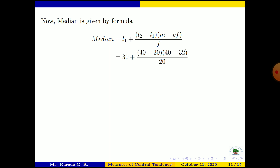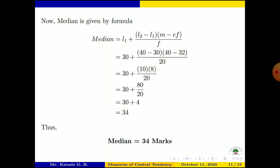Substituting values: Median = 30 + (40 − 30) × (40 − 32) / 20 = 30 + 10 × 8/20 = 30 + 80/20 = 30 + 4 = 34. Therefore the median of the given grouped frequency distribution is 34.